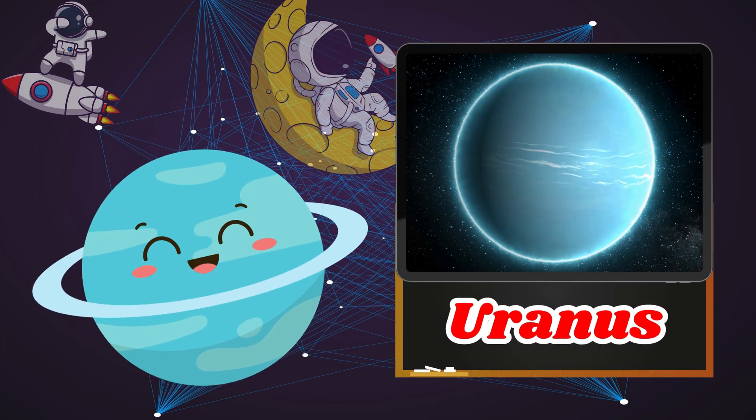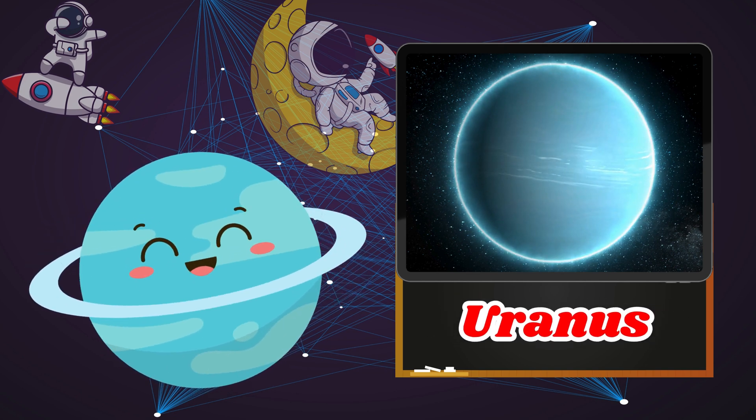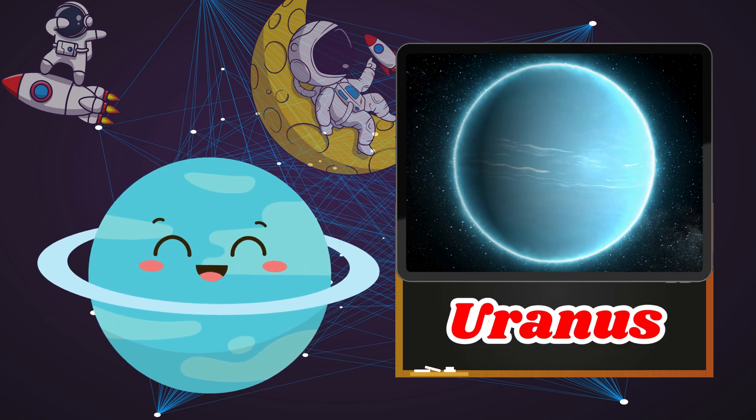Uranus is a blue-green planet that spins on its side. It's very cold and far from the Sun.